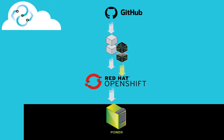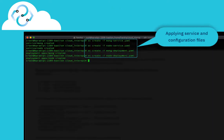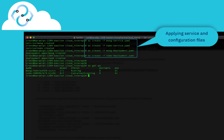We have now cloned the demo repository on the bastion node. This screen shows that we have successfully applied the respective service and deployment configuration files.